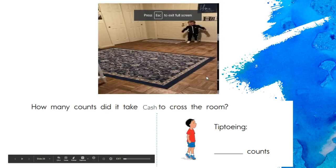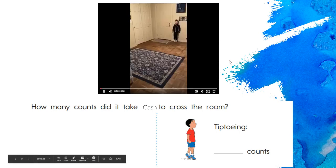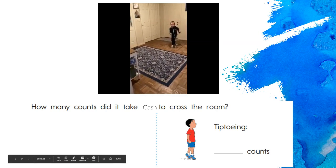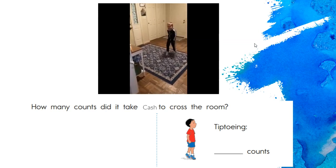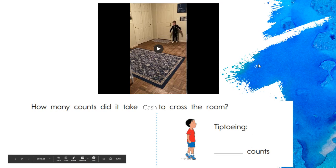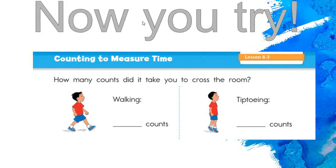We're going to count and see how many counts it takes for Cash to tiptoe across the room. Okay, one, two, three, four, five, six, seven, eight. So it took him eight counts to tiptoe. Now, remember, I used the same room and I counted at the same speed. So it took longer for him to tiptoe across the room.